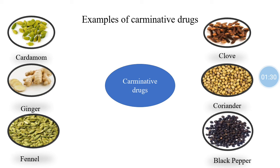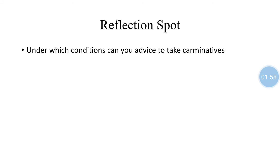A few examples of carminative drugs are cardamom, ginger, fennel, clove, coriander, and black pepper, among many more. Now for a reflection spot question: under which condition can you advise taking carminatives? The answer is that carminatives can be prescribed in indigestion, gastric discomfort, and even in loss of appetite.